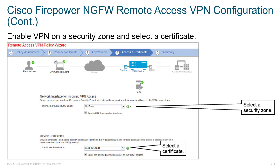For enabling VPN services on a security zone, we select the security zone from a dropdown box — in this case the zone is called "out zone." You can see that we've selected "Enable DTLS" on the member interface, giving us support for TLS over UDP on port 443. Below that, you see the device certificate option — do you want to use self-signed, or do you have a legitimate certificate from a real CA server? In that case, we can go ahead and select it here.